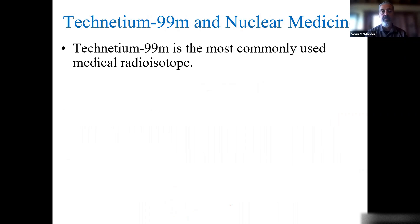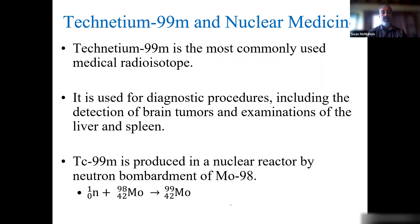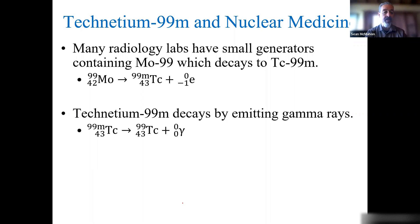Technetium is used in nuclear medicine as the most commonly used medical radioisotope. It's used for diagnostic procedures, including the detection of brain tumors and the examination of liver and spleen. Technetium is produced in a nuclear reactor by neutron bombardment of molybdenum-98. We can bombard it with a neutron and produce unstable molybdenum-99 radioisotope. Many radiology labs have small generators containing this, which will eventually decay to technetium-99m, where M stands for metastable—it's not very stable. That will decay, emitting a gamma ray, which can actually be used. That's what makes it kind of stable—it emits this gamma ray, and that can be used for biological procedures.